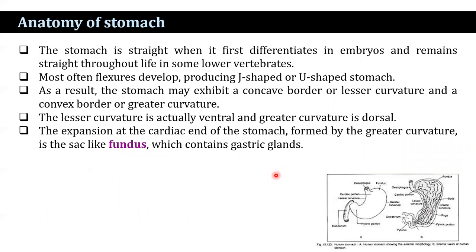The stomach is straight when it first differentiates in the embryo and remains straight throughout life in some lower vertebrates. Most often, flexures develop, producing a J-shaped or U-shaped structure. As a result, the stomach may exhibit a concave border known as the lesser curvature and a convex border known as the greater curvature. The lesser curvature is ventral and the greater curvature is dorsal in position. The expansion at the cardiac end formed by the greater curvature produces a sac-like fundus.